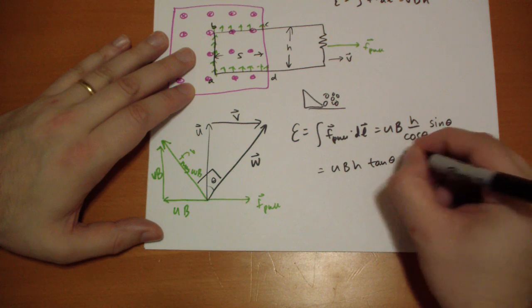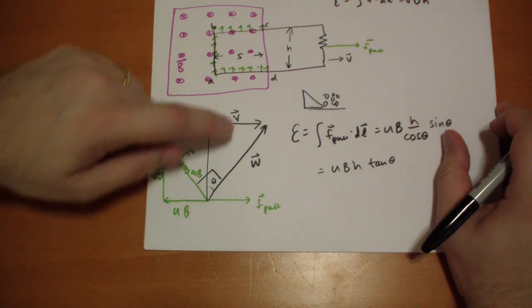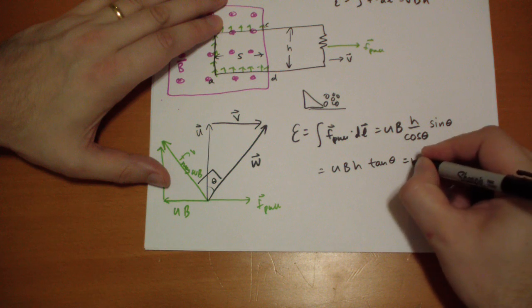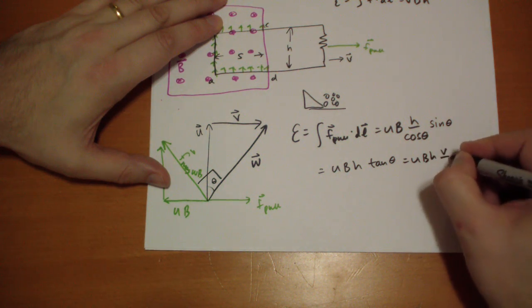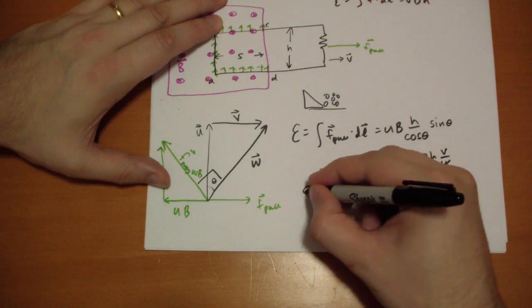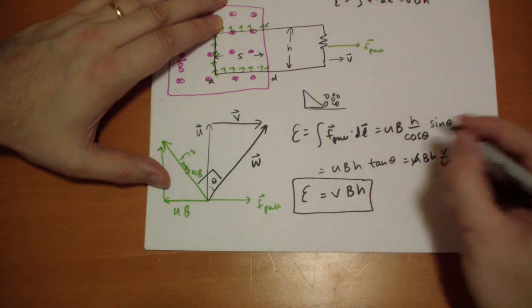And so now we have UB, H, tangent of theta. Well, that's just opposite over adjacent. So what's opposite? V over U. So that's UBH times V over U. U's cancel, and you get V, B, H. That's the EMF we calculate.